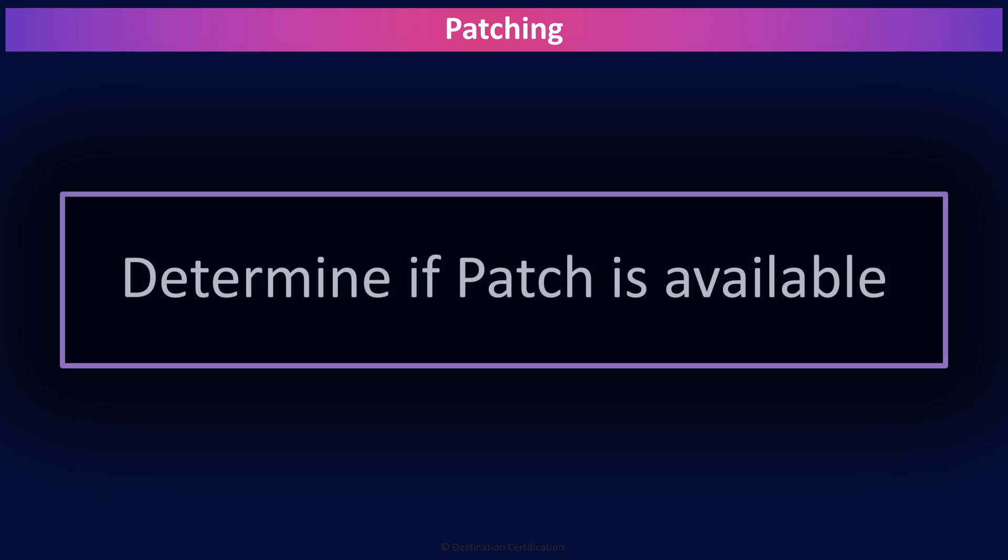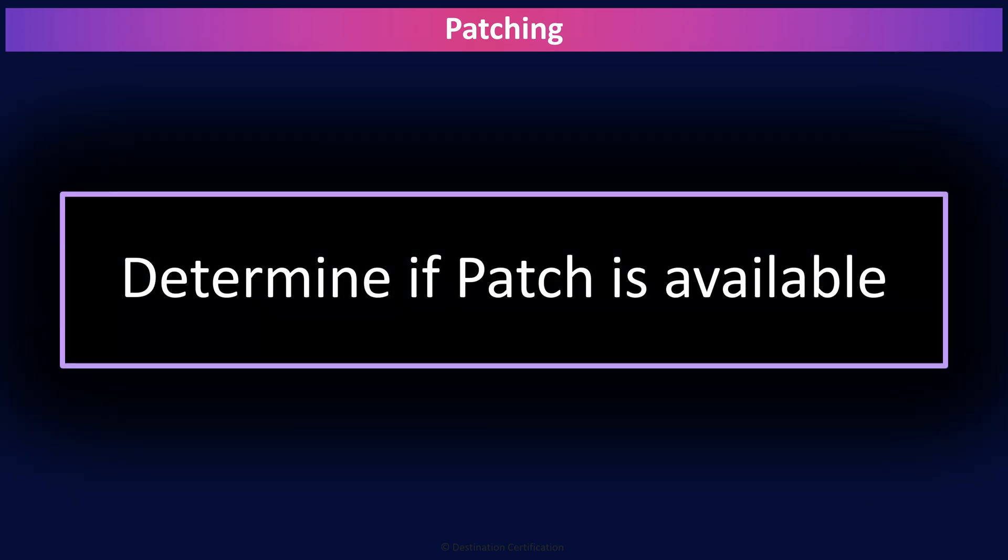The first step in the patch management process is to proactively determine if a patch is available. Organizations must have processes in place to identify if new patches are available, as most software and systems do not have auto-update features or provide notification when new patches are available. A few ways organizations can identify a need to patch include threat intelligence, vendor notifications, and various types of scanning.